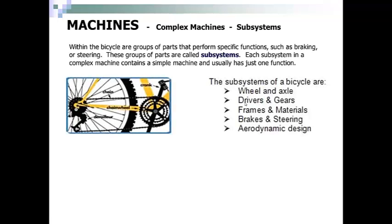The subsystems of a bicycle are wheel and axle, drivers and gears, frames and materials, brakes and steering, and aerodynamic design.